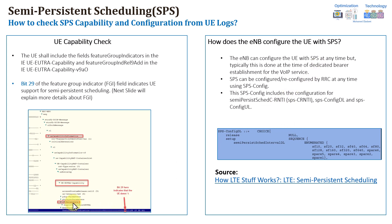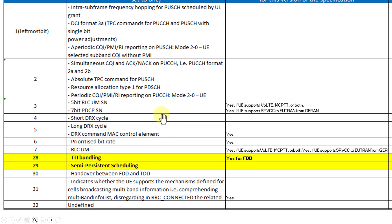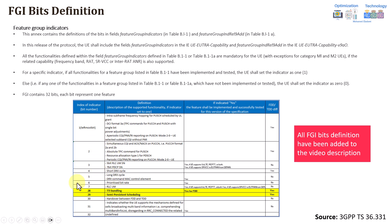Now let's move to the part related to the FGI feature to give more explanation about it. This table is quoted from 3GPP TS 36.331. You can see this table showing all the bits under the FGI or feature group indicator, with each bit giving explanation addressing whether the bit is supporting which feature. For example, bit 28 is showing TTI bundling — if bit 28 is 1, this means the user supports TTI bundling; if it's 0, this means it does not support. Same for bit 29 for semi-persistent scheduling and same for the handover part. I will attach in the video description the complete explanation for all 32 bits.